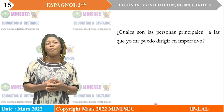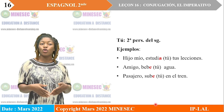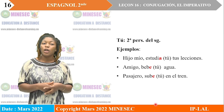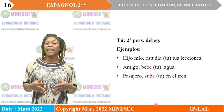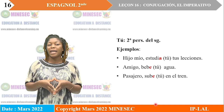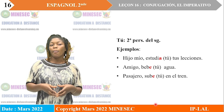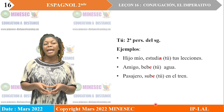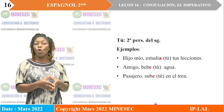¿Cuáles son las personas principales a las que yo me puedo dirigir en el imperativo? Tenemos tú, la segunda persona del singular. Como ejemplo: hijo mío, estudia tus lecciones. Cuando se dice 'estudia' aquí, hay que saber que gracias a la terminación del verbo, se puede saber que es a tú que se dirige. Hijo mío, estudia tus lecciones. Amigo, bebe tu agua. Pasajero, sube en el tren.